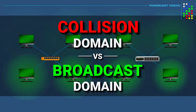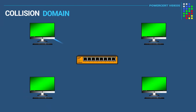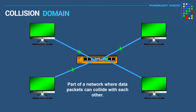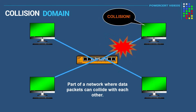A collision domain is part of a network where data packets can collide with each other. This happens when devices on the same network send data at the same time, which results in a collision. When a collision happens it slows down a network because the devices now have to wait a random amount of time to resend their data.